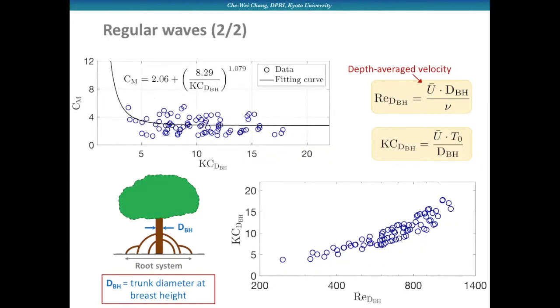We also have the relationships between the inertia coefficients versus KC number. By plotting these two dimensionless parameters, it appears that for our regular wave testing conditions, the drag and inertia effects are actually comparable, which means it should be more precise to take both drag and inertia effects into account instead of ignoring either one.